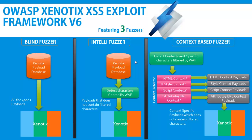Considering those problems, we developed two Fusors called Intelli Fusor and Context-based Fusor. Intelli Fusor first detects the WAF employed by the application, then detects which characters in its database are filtered or not. If those characters are filtered, it checks all payloads in the Xenotix default payload database and allows only payloads that do not contain the filtered characters. This essentially reduces scan time and gives better output in less time.